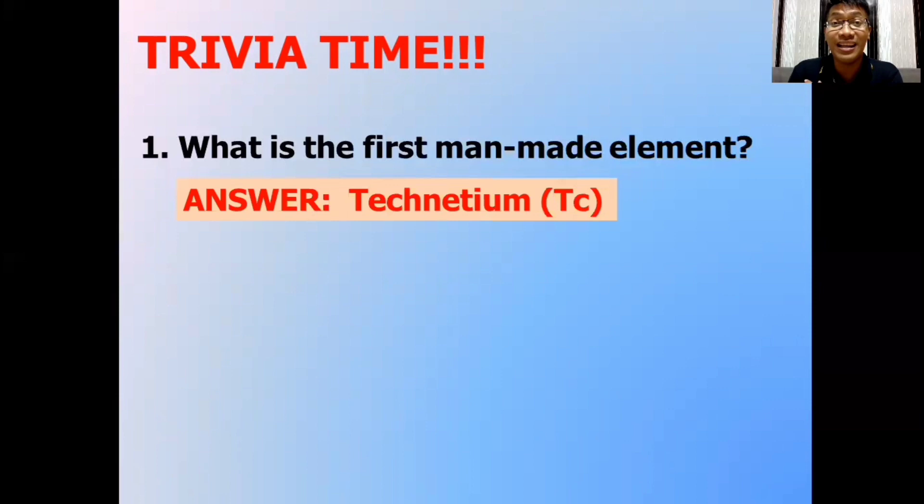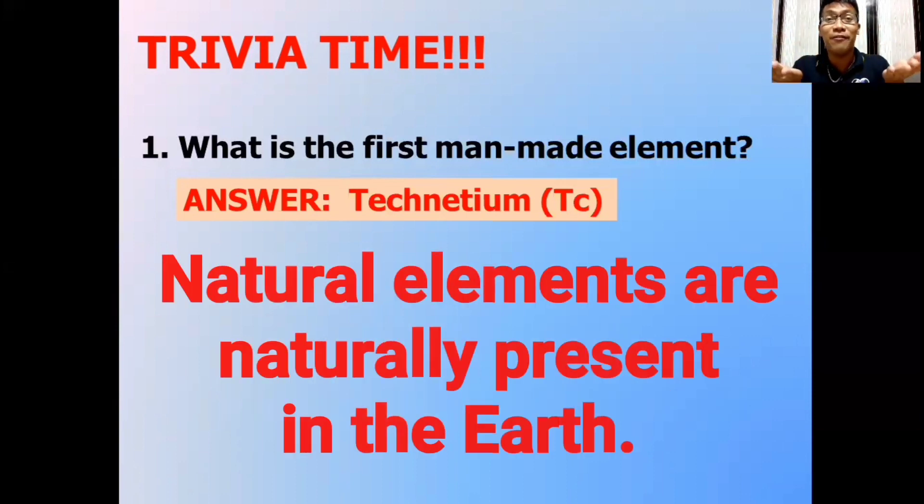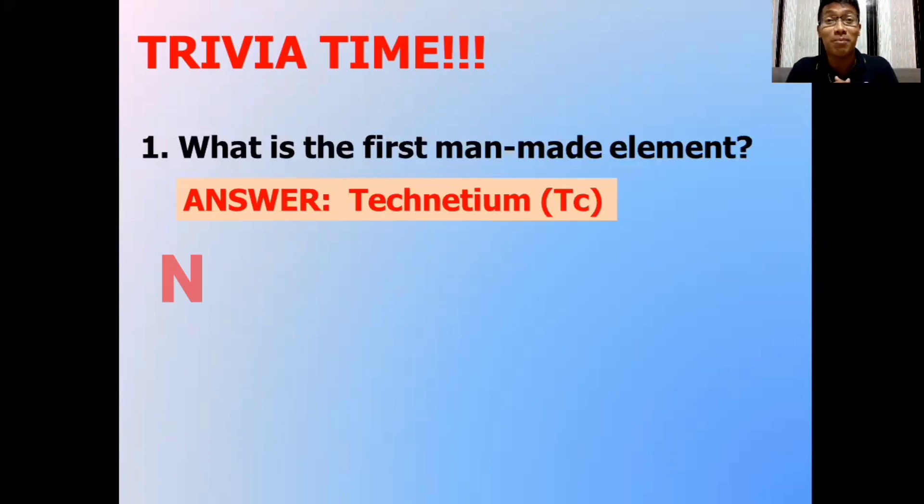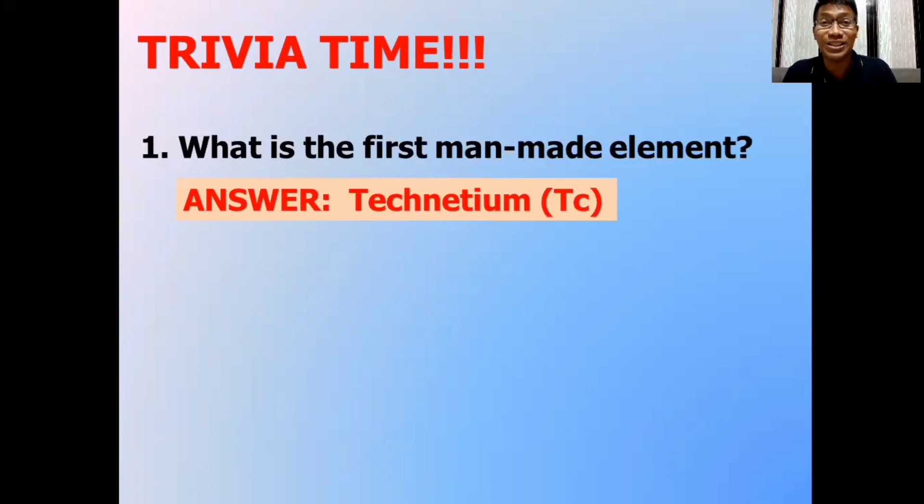The elements in the periodic table are classified as natural or man-made. When we say natural, they can be found here in the earth. While man-made, it is laboratory made or designed. And technetium is the first man-made element. By the way, when we write a chemical symbol of an element having two letters, we have to write it this way. The first letter should always be capitalized. While the second letter should be... That's right! Lowercase.